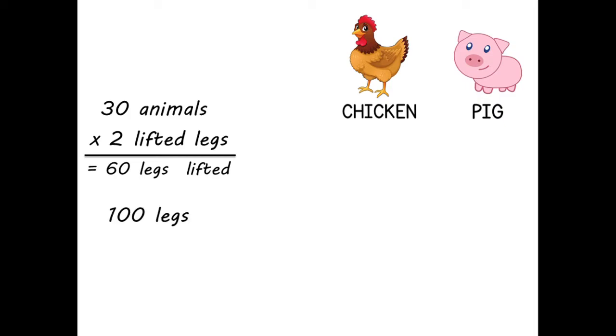Remember that there are 100 legs altogether. So subtracting it by 60 means that there are still 40 legs left on the ground after each animal lifted two legs off the ground.